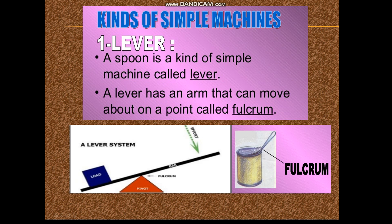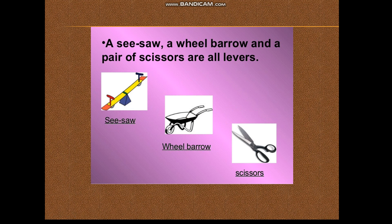In this example of a lever, you can see a rod resting on a pivot. The point of contact between the rod and the pivot is called the fulcrum. The force, which is called the effort, is applied on one end of the lever, which is used to lift the load on the other side. A wheelbarrow and a pair of scissors are all examples of levers used in our everyday life.